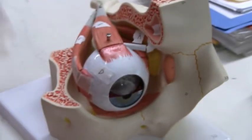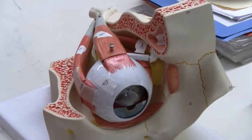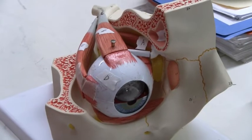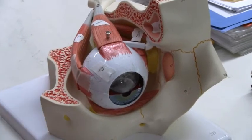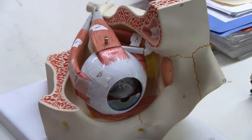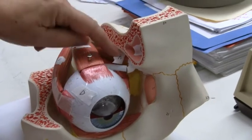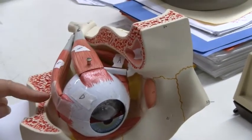Oculomotor means eye mover, so it controls four of the six extrinsic muscles. Which ones does it control?